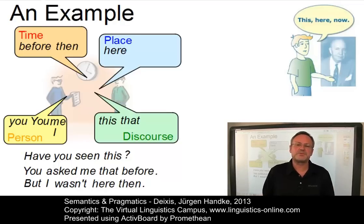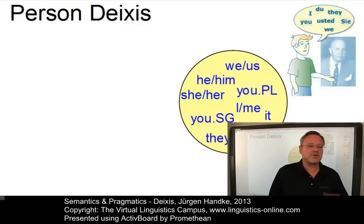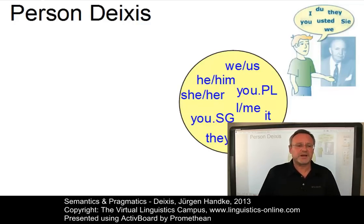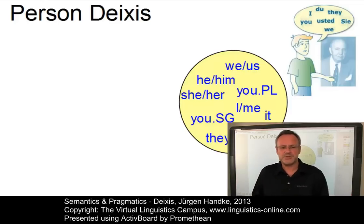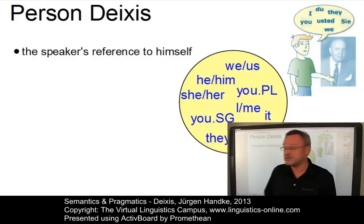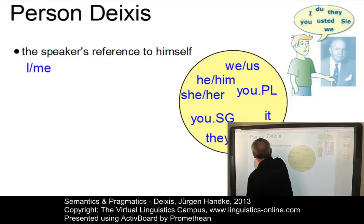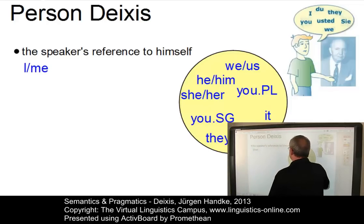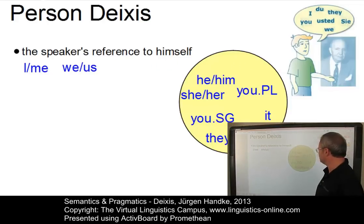Let us now look at these types of deixis in more detail, starting with person deixis. Person deixis is normally realised by personal pronouns and it is concerned with encoding the roles of the participants in the speech situation. Person deixis involves the speaker's reference to himself — that is, the first person. Elements such as 'I' and 'me' are typical, as are 'we' and 'us' — the first person singular and plural pronouns.